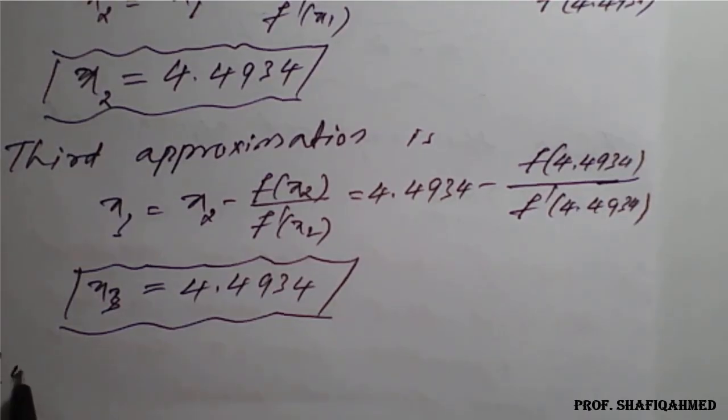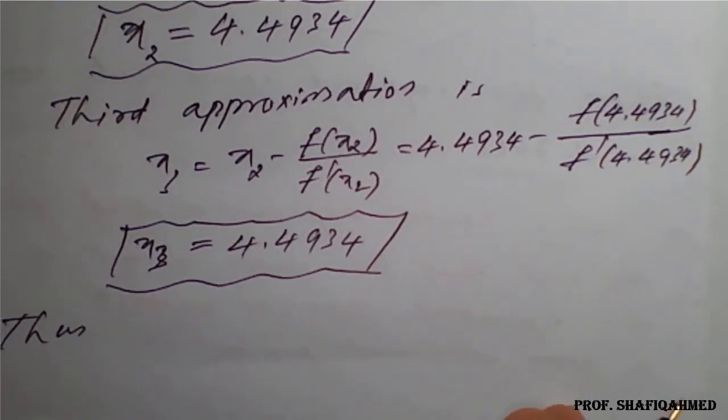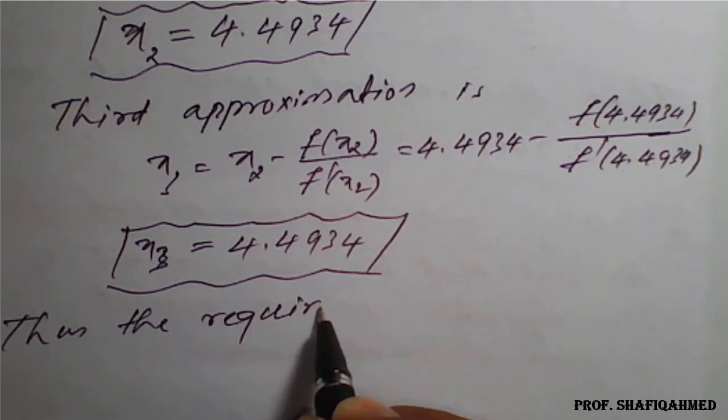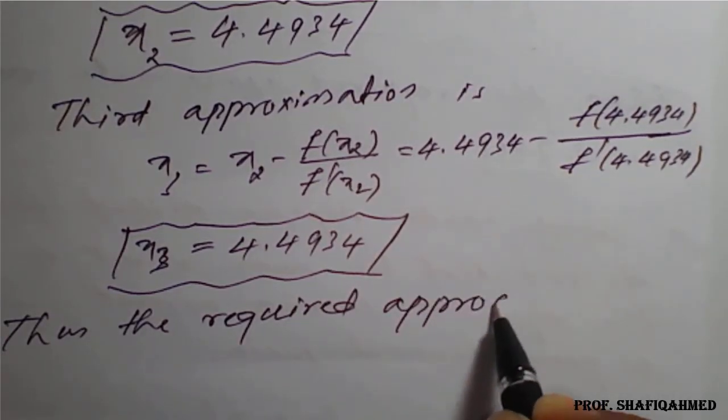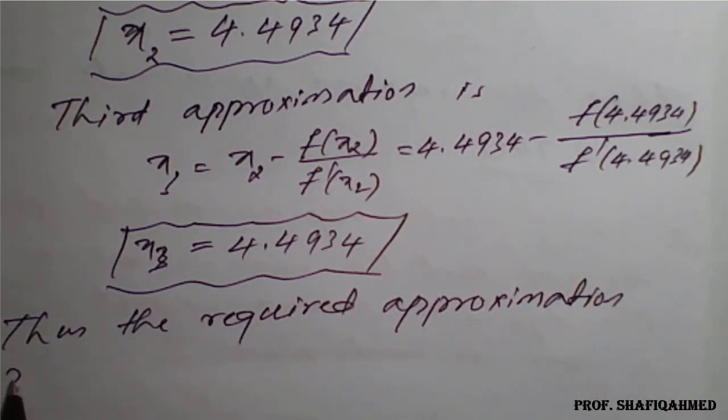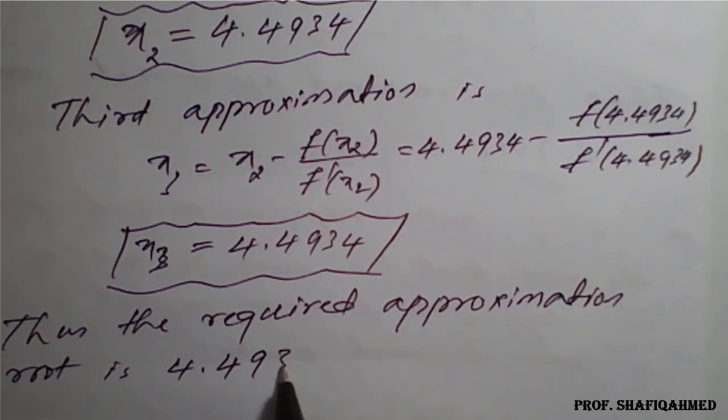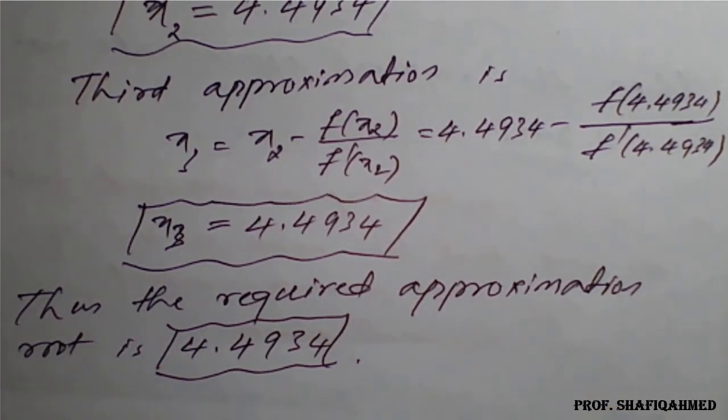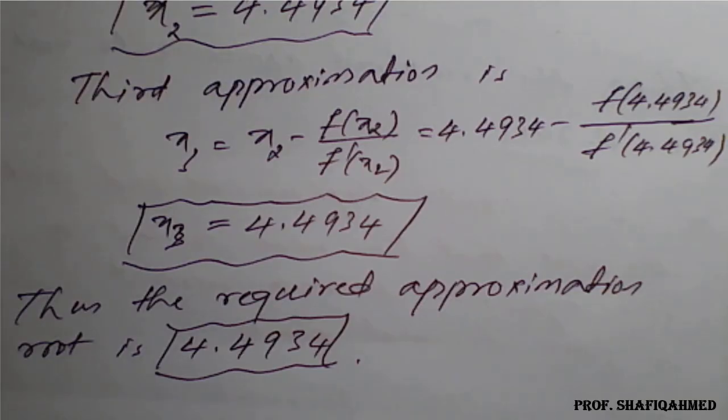Therefore, we can conclude: thus, the required approximation root is 4.4934. This is the required result of the given function tan x equals x. In this way, we need to simplify a problem based on Newton-Raphson method under numerical methods.